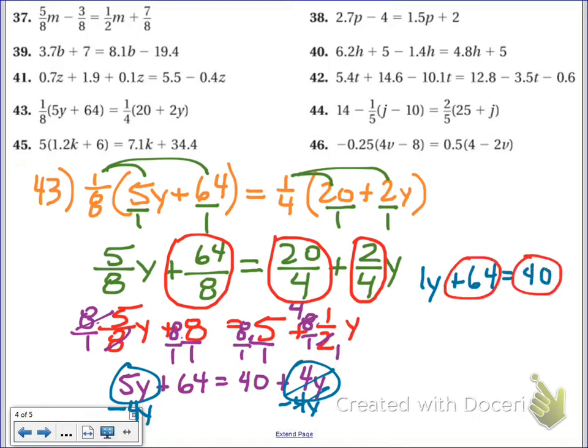From here, 64 and 40 are like terms, different sides. So, I'm going to move my numbers to the right and subtract 64 from both sides. And then that will leave me with 1y on the left. And the math, we have to do 40 minus 64. That's kind of weird because the bigger number is on the bottom. So, I'm going to rearrange it in orange over here. 64 minus 40.